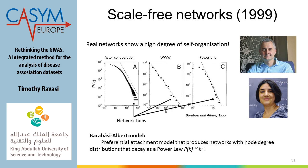The power law introduced another big concept important for what we're interested in: link prediction. It introduced the concept of preferential attachment. What the power law plot tells us is that in most real networks, the majority of nodes have few interactions, but there are a few nodes with a very high number of interactions — these are called hubs. The network is also scale-free: it doesn't scale proportionally with the number of nodes.